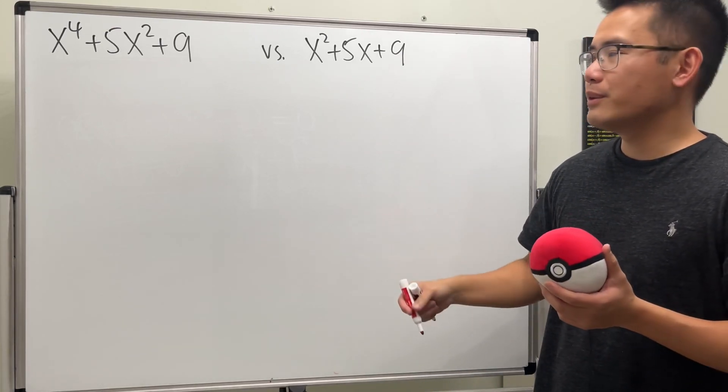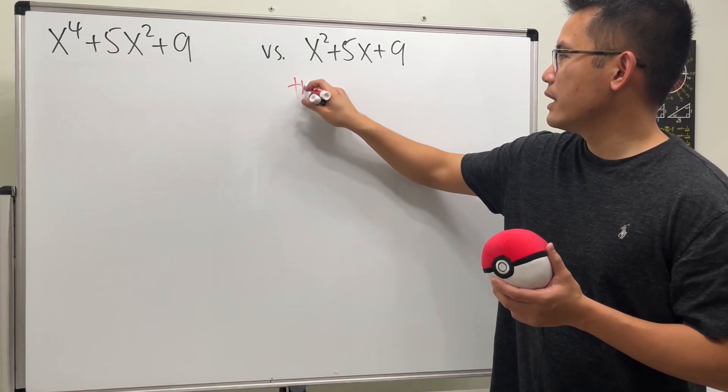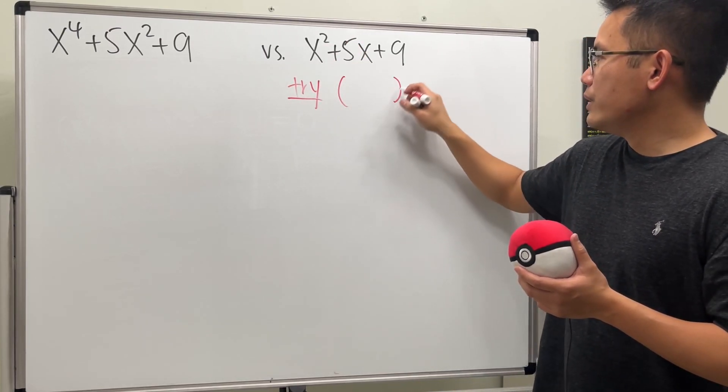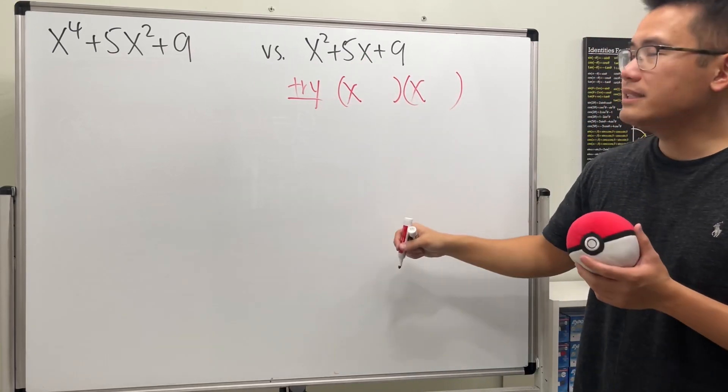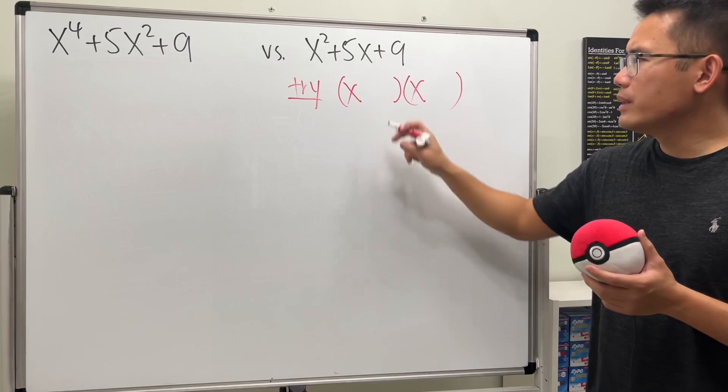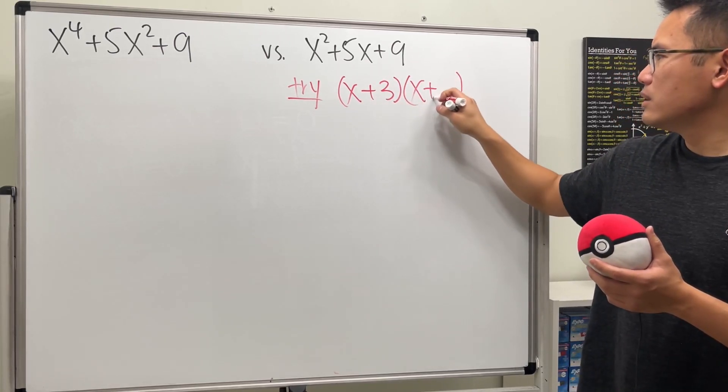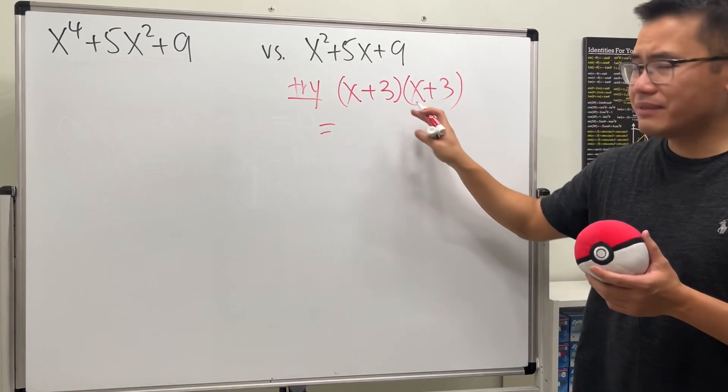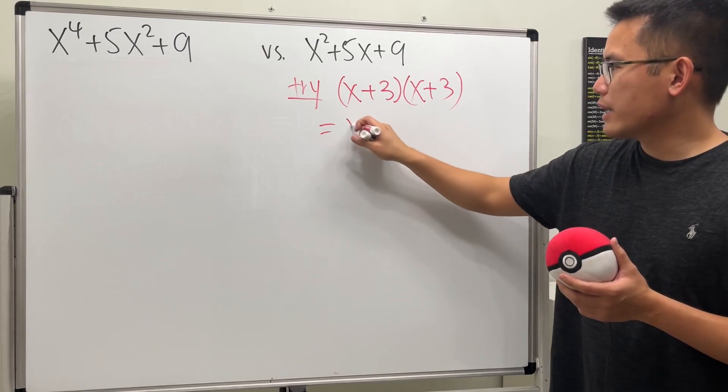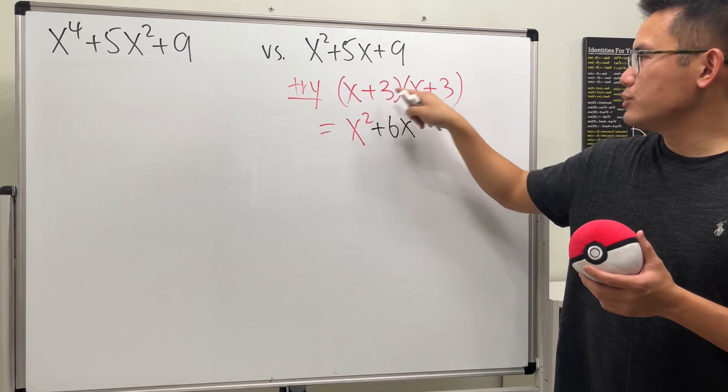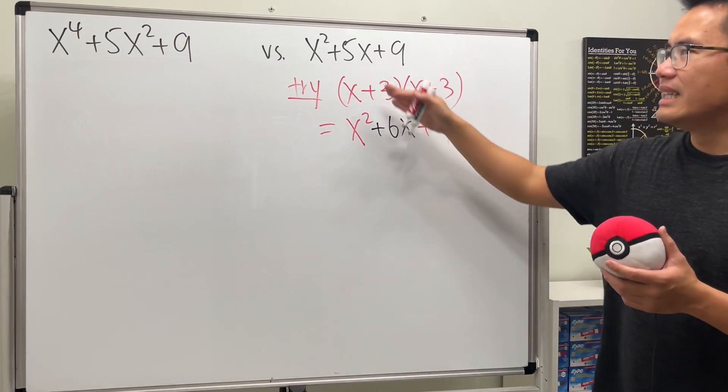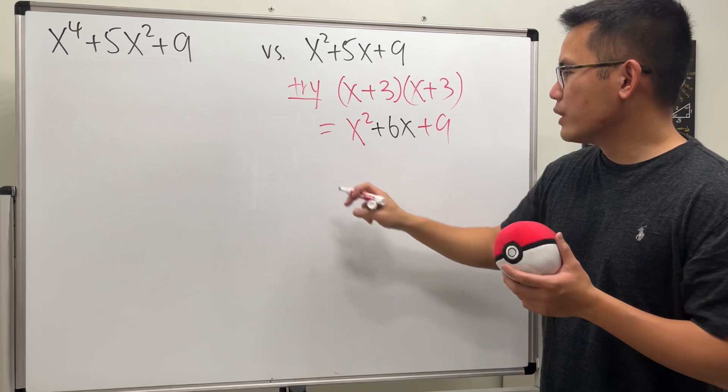For example, we can say let's go ahead and try. We need to have x times x to get x squared, and then for the nine maybe we can do three and three. But if we have this, after multiplying I will actually end up with x squared plus 6x right, because 3x and 3x, and then plus 9. That's not what we want.